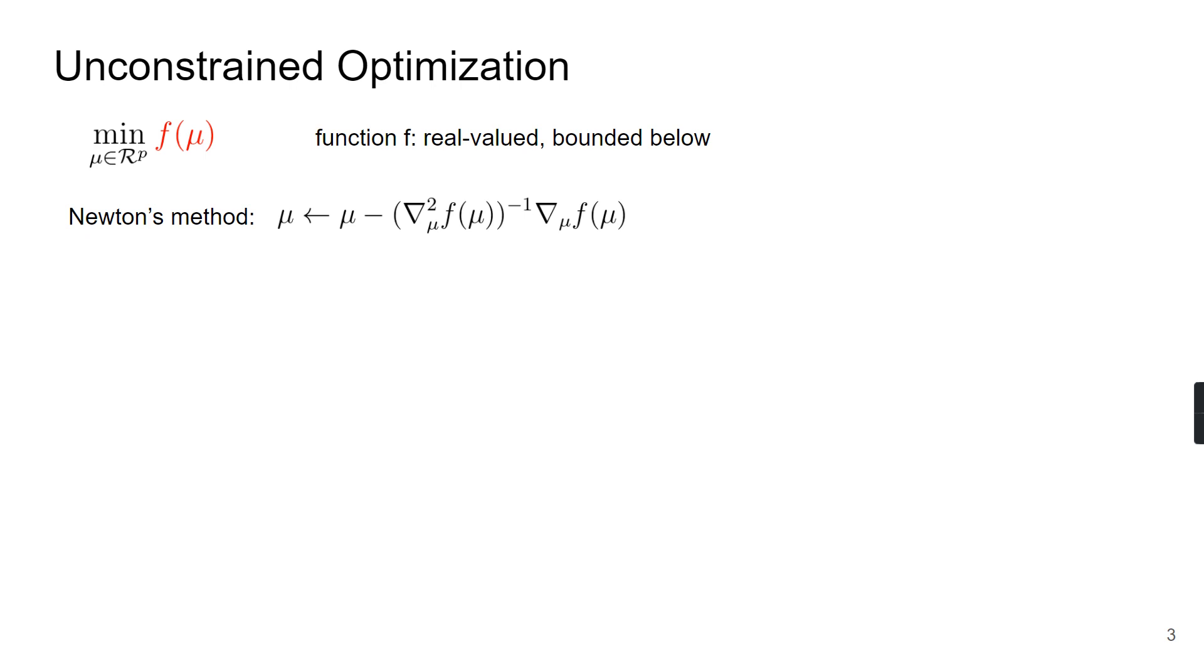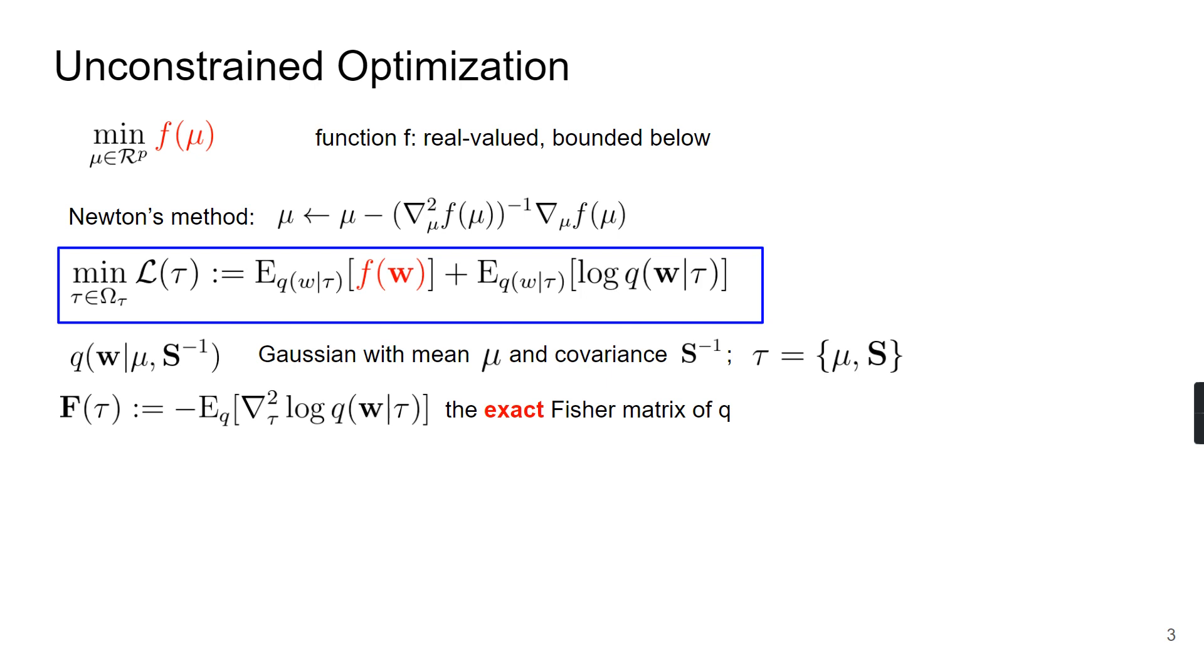Let's consider an unconstrained optimization problem where function f is bounded below. For now, we will assume the function is continually twice differentiable, and we could use Newton's method to solve these problems. To use natural gradient descent, we reformulate the problem into a new problem as shown in the box, where q is a Gaussian with mean mu and covariance S inverse. The precision is the inverse of the covariance matrix, and F is the exact Fisher information matrix of the Gaussian. And we can perform natural gradient descent to solve this reformulated problem.